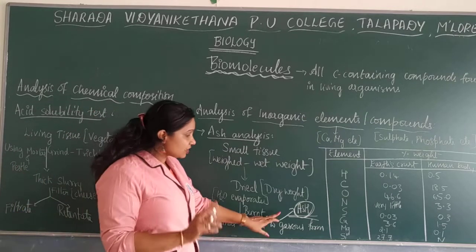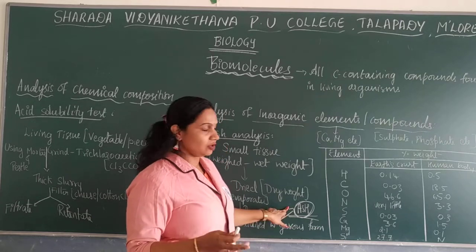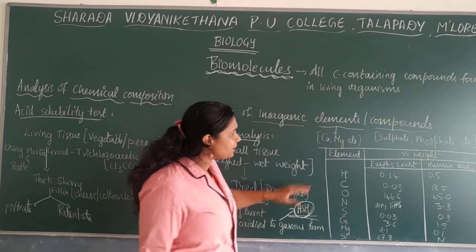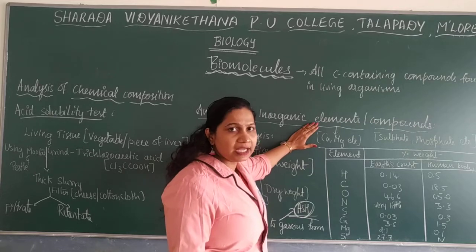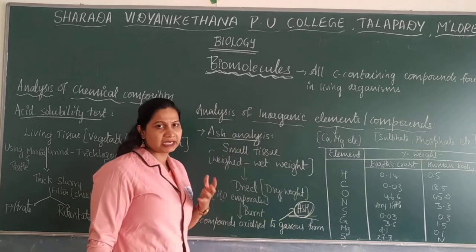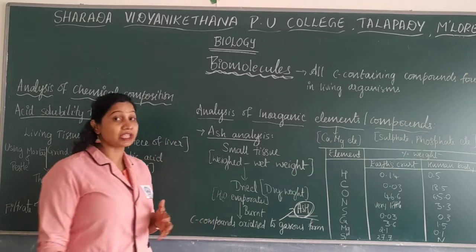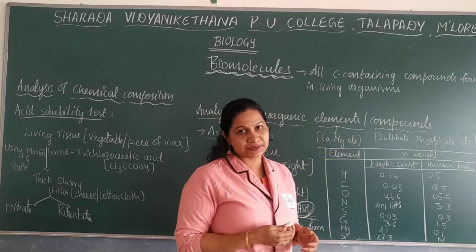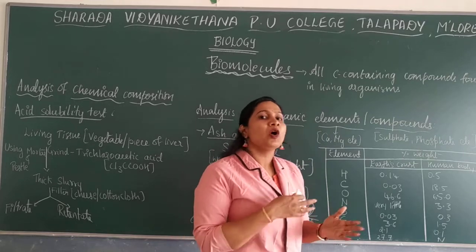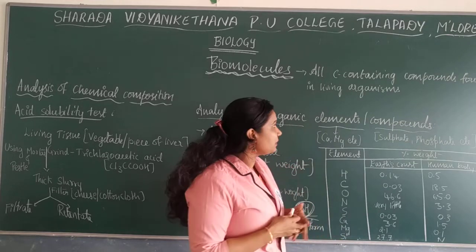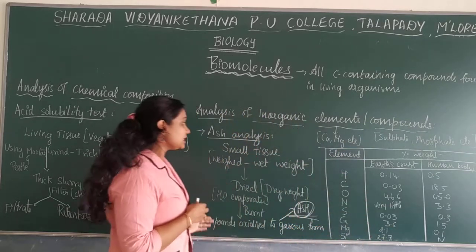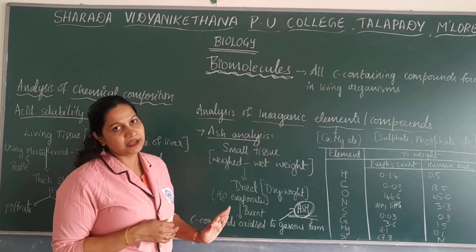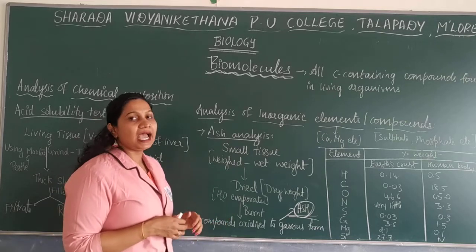This ash can be further examined for various chemical compounds. For example, it may consist of inorganic elements such as calcium and magnesium, or inorganic compounds such as sulfate, phosphate, and sodium chloride. This test is mainly done to identify the inorganic elements or compounds found in a living tissue.